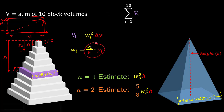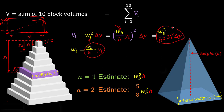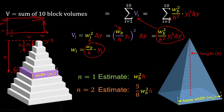Taking that expression for v sub i, we plug it into our summation to get a more specific summation term: the sum from i equals 1 to 10 of (w sub b over h) squared times y sub i squared times delta y. We could solve for delta y and add up all 10 terms to get the volume. But we're actually pretty close to converting this into an integral form, so let's go ahead and do that to get an exact answer instead.